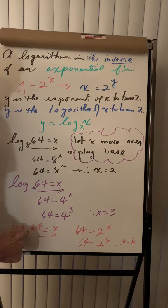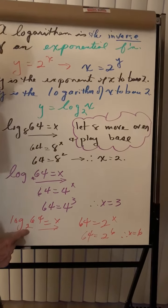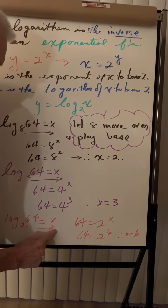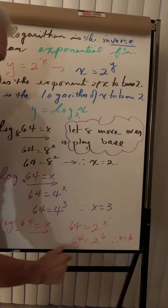Let's change the base to 2. The log of 64 to the base 2. Let 2 move over and play base. So it becomes 2 to the 6th becomes 64.